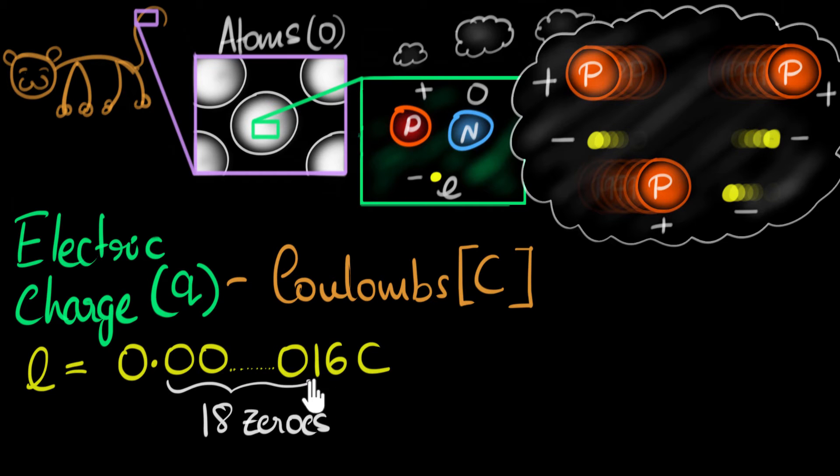And of course, since it is so small, we often like to represent this in scientific notation. So we will shift this decimal all the way to here, and we'll write it as 1.6 times 10 to the power...